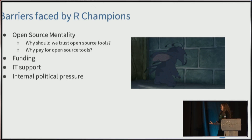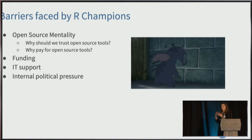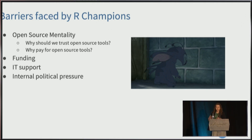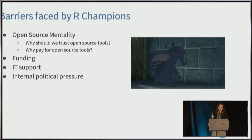So what are some of the barriers? Now that I've got you stoked about being an R champion, these are a few of the ones I came up with — definitely not all of them, but this is a short talk. Some of the ones I see are the open source mentality — why should we trust open source tools and why should we pay for open source tools? There are also funding issues, IT support concerns, and of course internal political pressure, everyone's favorite.